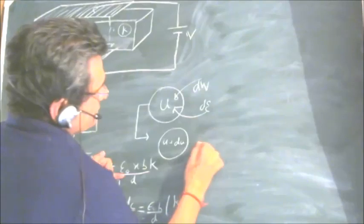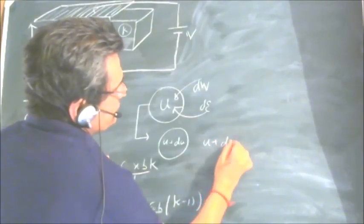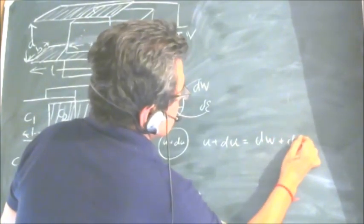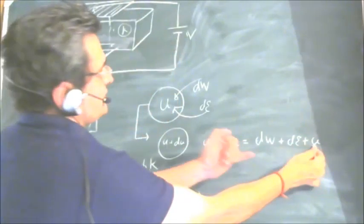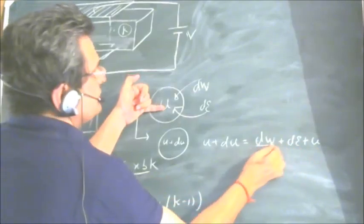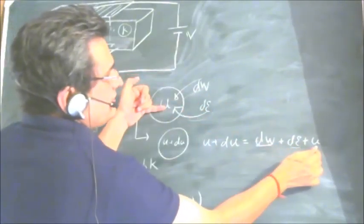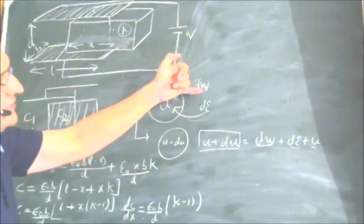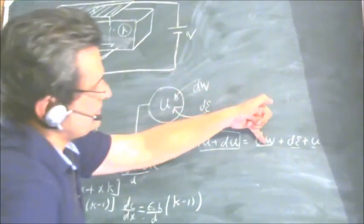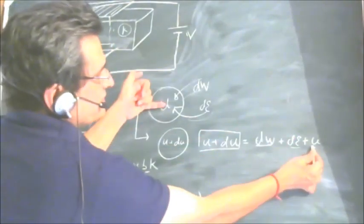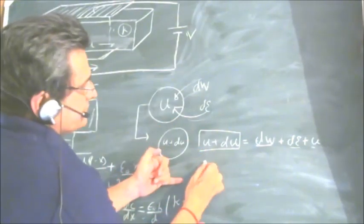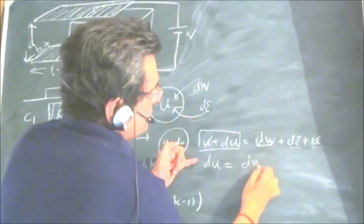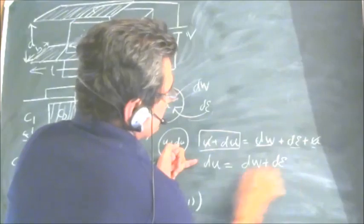U plus DU would be equal to DW plus DE plus U. That is, DW and DE are added to the initial energy U to get the final energy U plus DU. So the change in energy in such cases is equal to work done on the system plus energy given to the system.